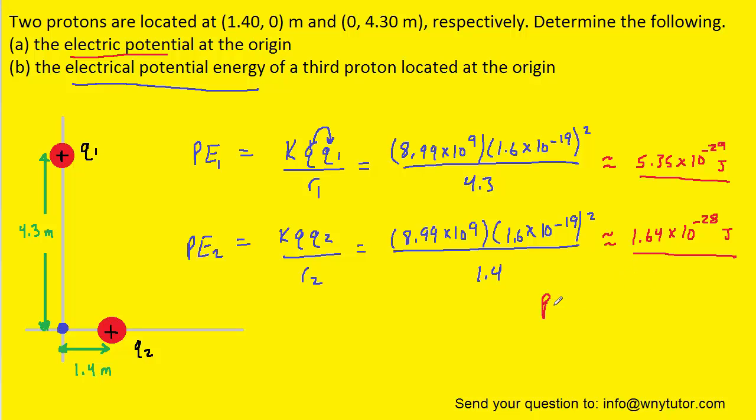And when we do that we get a total potential energy of approximately 2.18 times 10 to the minus 28th joules. So this would be the correct answer to Part B.